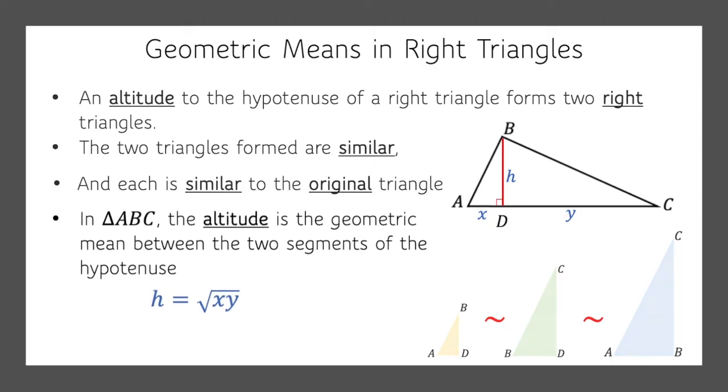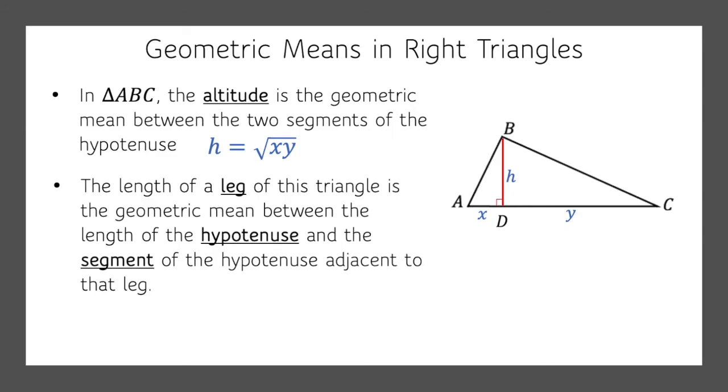We can go even further. The length of a leg of this triangle is the geometric mean between the length of the hypotenuse and the segment of the hypotenuse adjacent to that leg. Again, it sounds worse than it is, but here we go. We're going to add some legs and a hypotenuse to our triangle. So we have legs A, B, and C. And let's look at leg B. I know that the length of B is the geometric mean of X and C, or the square root of X times C. We can look at A and say that A is the geometric mean of Y and C.